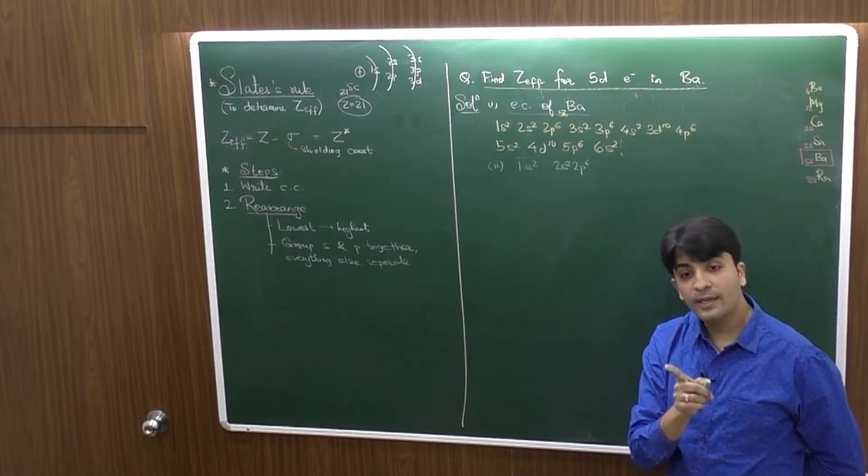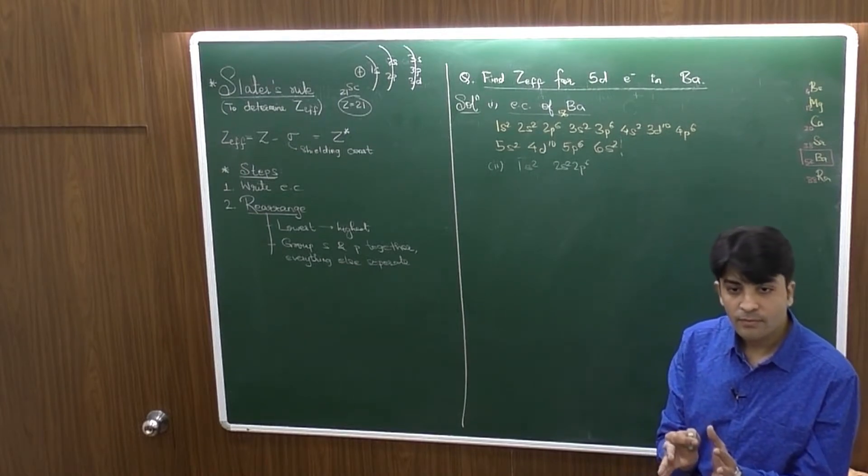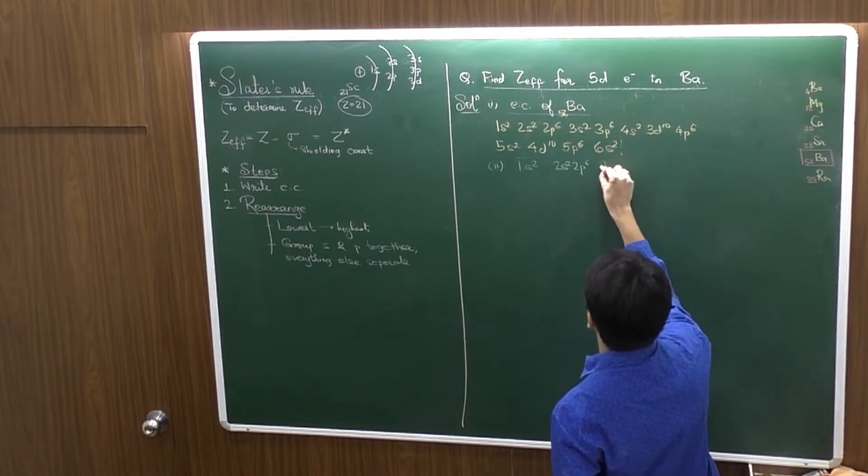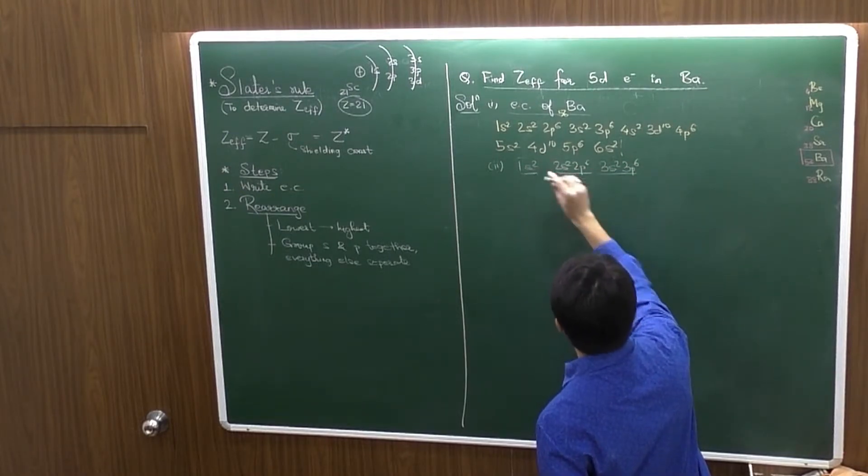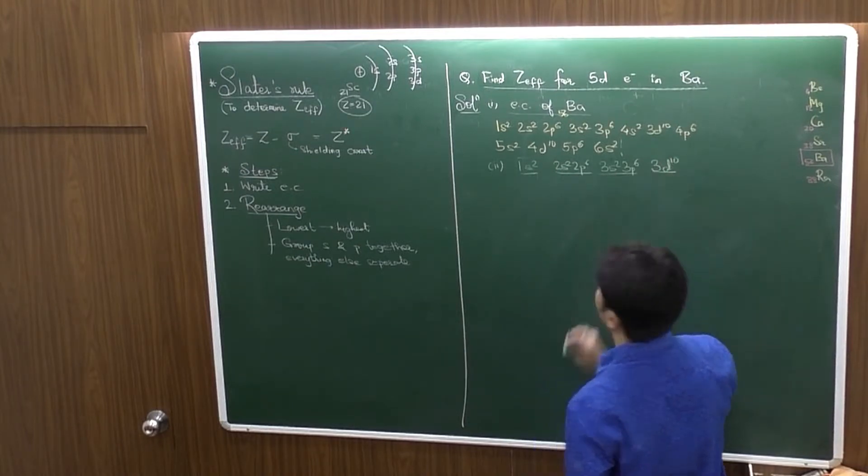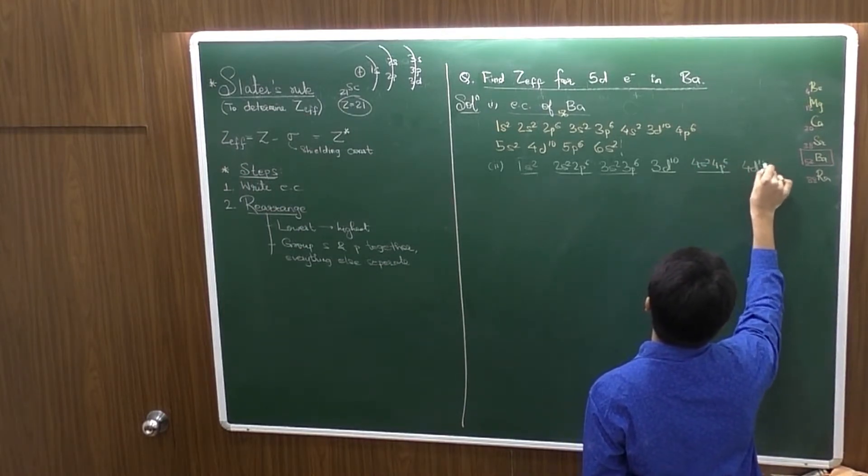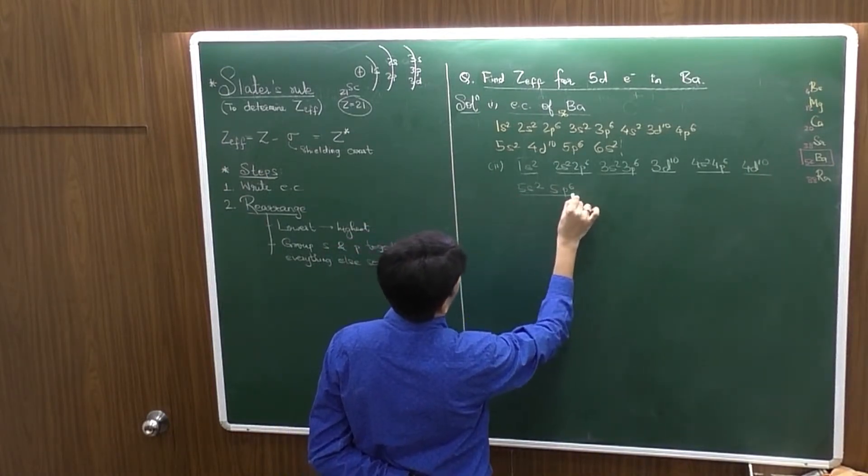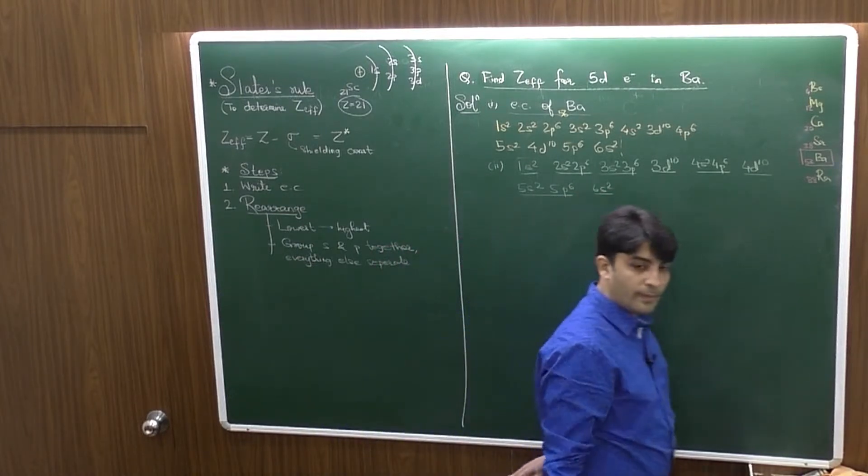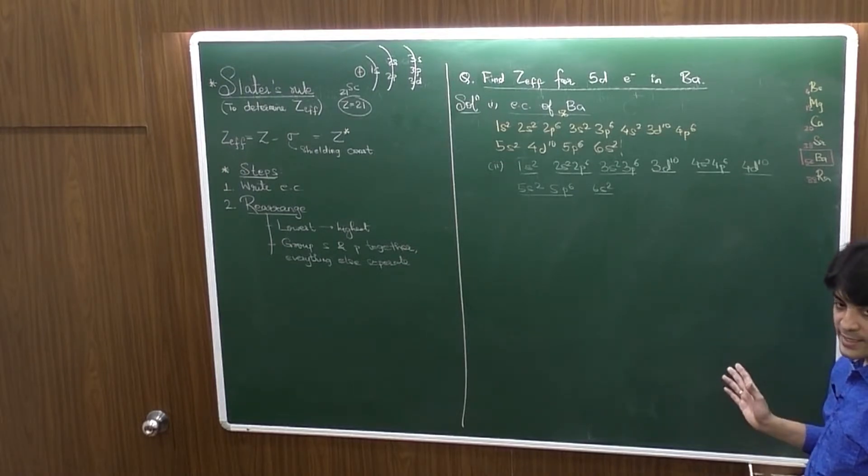You have to arrange the orbitals or the sub-shells from lowest till highest, 1 to 6. Along with that, group the S and P together and D and F separate, everything else separate. I will rewrite this by arranging. So, I have 1S2. Second, I have 2S2 and 2P6, I have to keep them together, 2S2 2P6 with a space in between. Third, now I have 3S2 3P6 and 3D10.